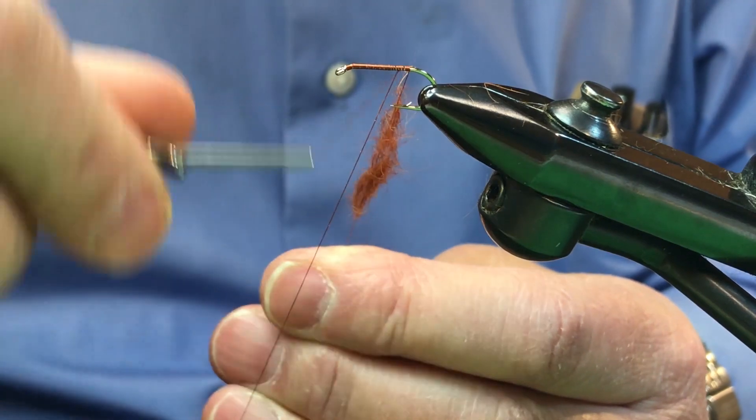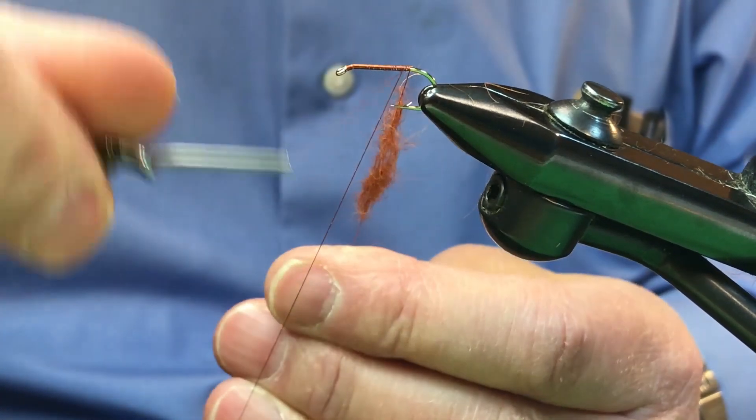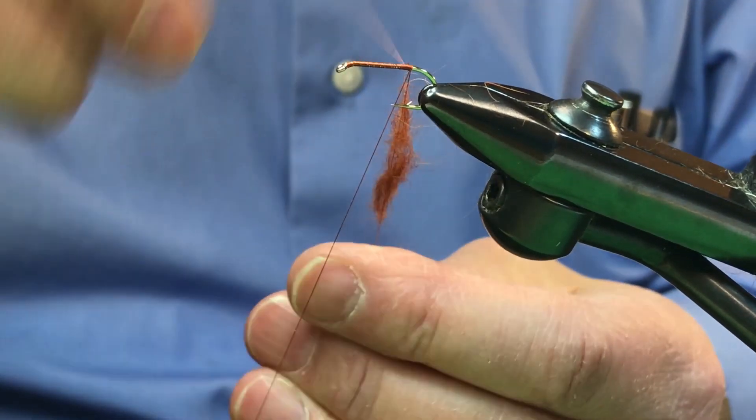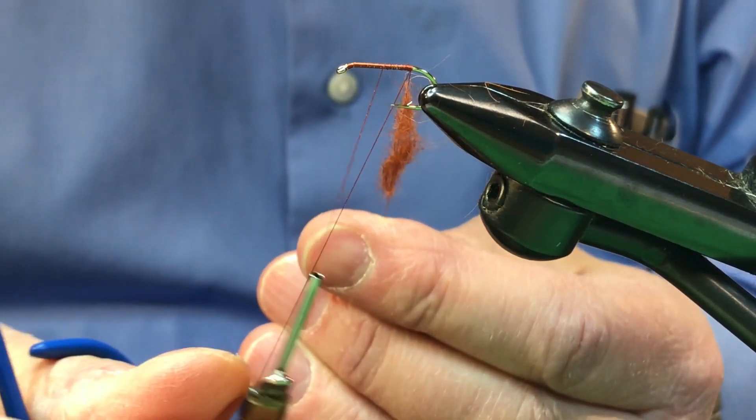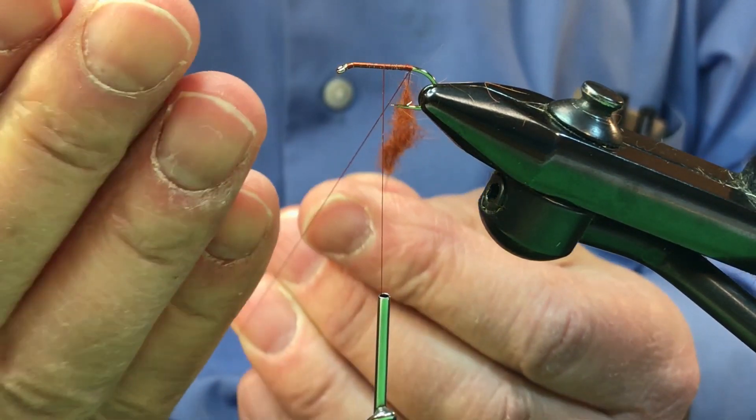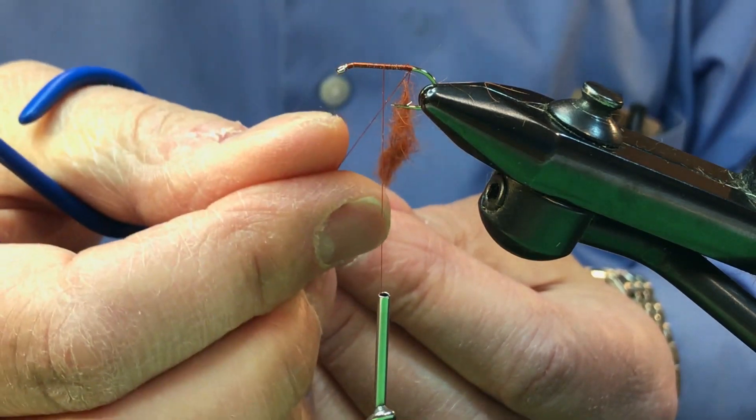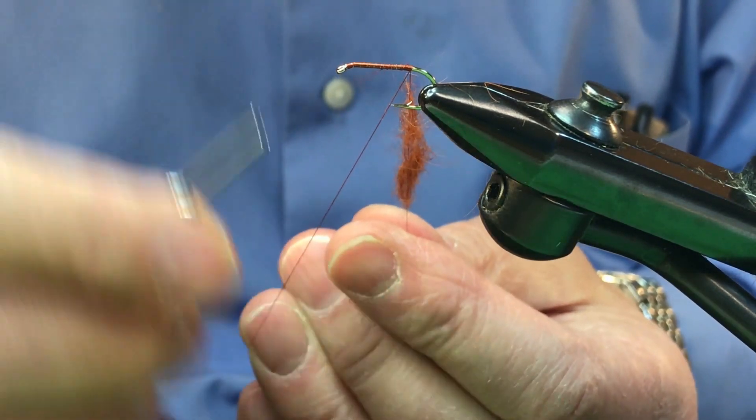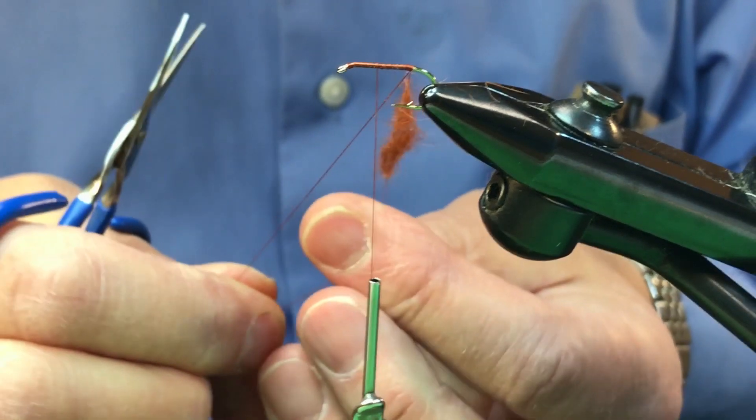Just draw your thread down, make a loop like this, and secure it on the shank. So now you've made your dubbing loop, but what you've done is you put the dubbing on first. Normally when you see dubbing loops, they insert the dubbing in the middle. This is the simplest way to do it and you don't need a tool.